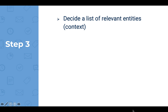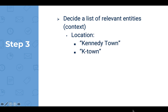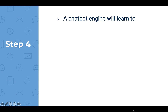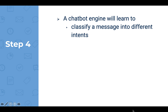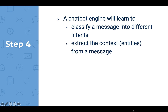Step 3: Design a list of relevant entities or contexts. For example, if the user says "Kennedy Town" or "KT", then the chatbot knows that this is the concerned location. Step 4: A chatbot engine will learn to classify a message into different intents. That means the chatbot knows what the user is asking for by extracting the context entities from a message.